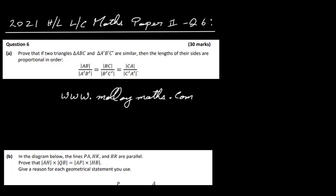Okay, so in this video I'm going to have a look at the 2021 High Level Leaving Cert Maths Paper 2, Question 6. We have to prove that if two triangles ABC and A'B'C' are similar, then the lengths of their sides are proportional in order. Now this is one of the three geometrical proofs that you have to be able to do. It's theorem number 13. So you can have a look at that in your textbooks or have a look at the video that I made of it. You'll find it on YouTube or you can have a look at MolloyMaths.com.